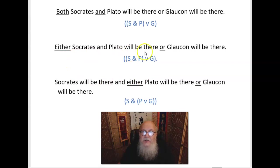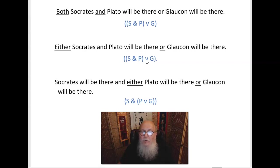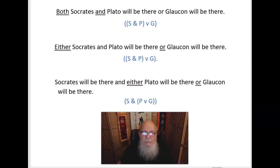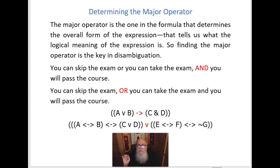Here's another example: 'Either Socrates and Plato will be there, or Glaucon will be there' — giving (S and P) or G. The coordinate phrase 'either...or' works the same way. And likewise: 'Socrates will be there, and either Plato will be there or Glaucon will be there' — S and (P or G). What's crucial in all this is determining the major operator, because that gives us the overall form of the expression and tells us what the logical meaning of the expression as a whole is. So finding the major operator is the key thing to do in disambiguation.